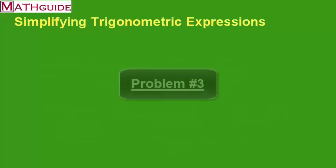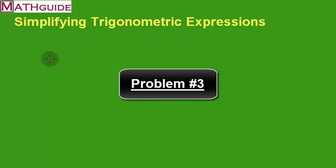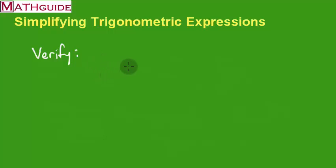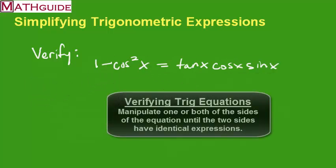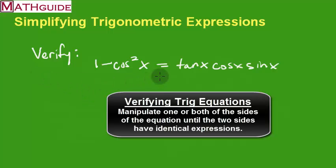Now we're going to pick up with our last problem. Sometimes when we're simplifying these trigonometric expressions, the directions might be a little strange — you might see something that says verify, and you're given an equation: 1 minus cosine squared x equals tan x times cosine x times sine x. When you see something like this, what we have to do to verify that this equation is correct is prove that the left side is equal to the right side. I could simplify either side, or even both sides, and if I can eventually get the two to look alike, I'll have verified this equation.